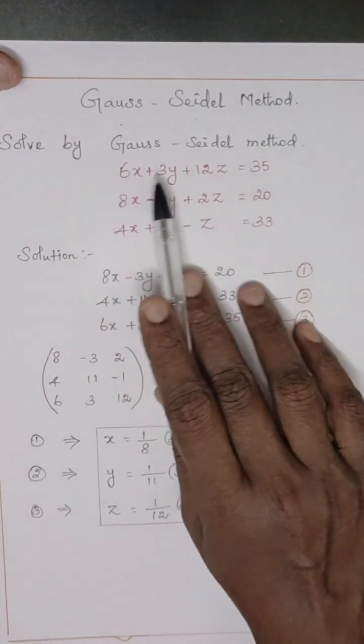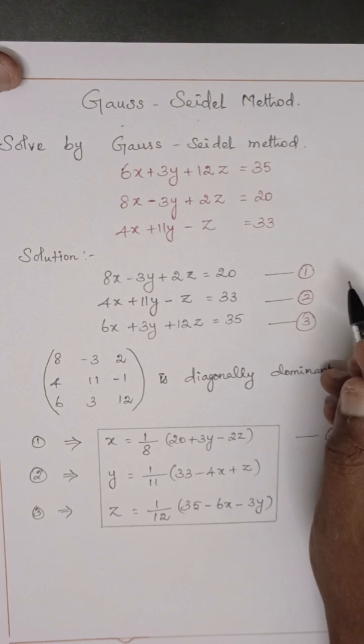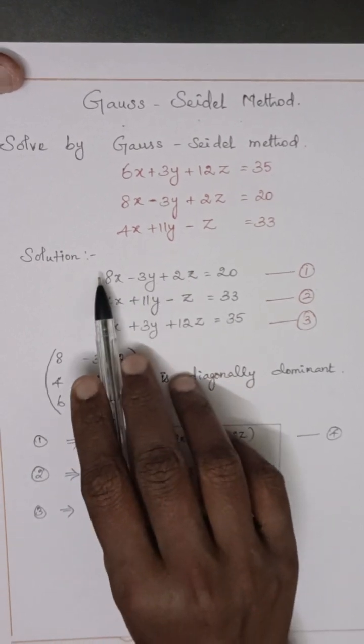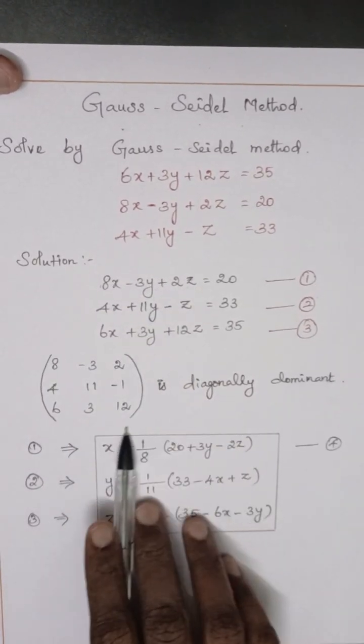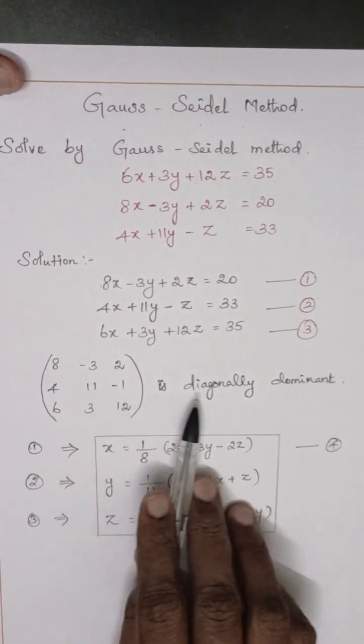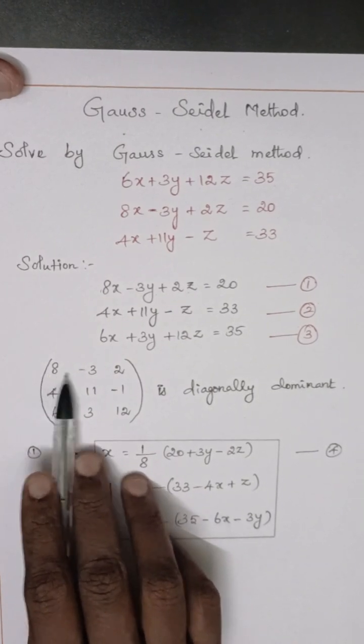So first we have to check that equations are diagonally dominant. What is mean by diagonally dominant? The coefficient of x, y, z, we take the coefficients and create one matrix. The diagonal element is greater, that's what we check.